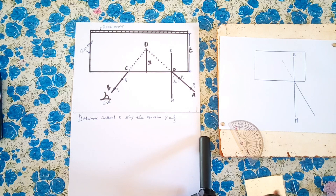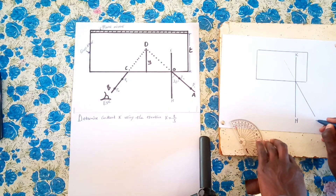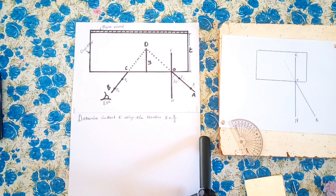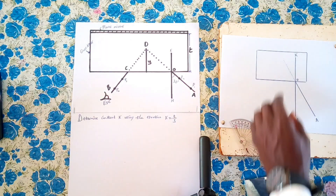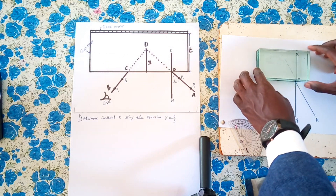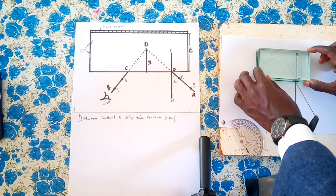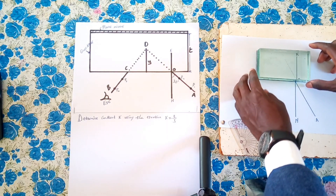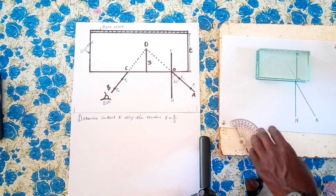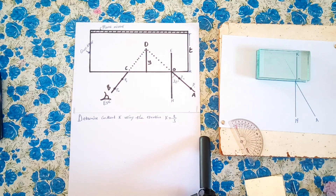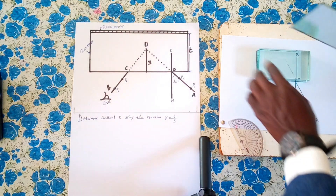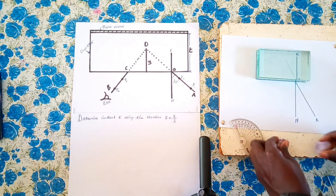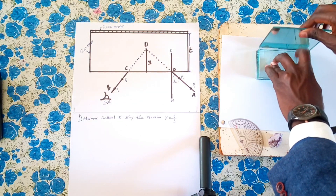This is point A and this is point O. From there, we replace back the glass block as it was initially. We have to confirm all the sides. We then replace back the glass block, and from there we place the plain mirror. We place back the plain mirror, and we are going to use plasticine to stick it there.